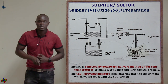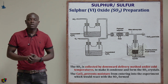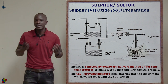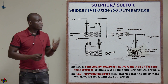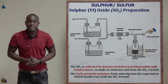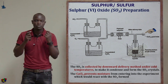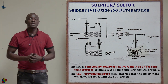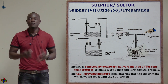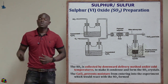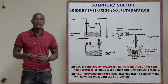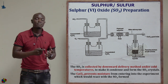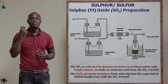After the reaction, sulfur 6 oxide is collected under a very cold environment in order to enable it to condense and cool to form liquid sulfur 6 oxide. We also have calcium chloride in the experiment, and its function is to prevent moisture from entering the experiment from the other side. Sulfur 6 oxide solidifies under cool temperatures and is collected as solid crystals.